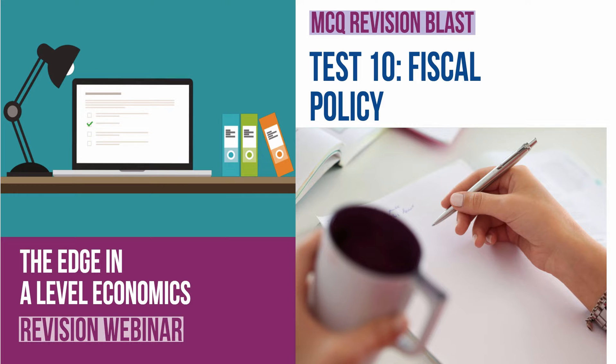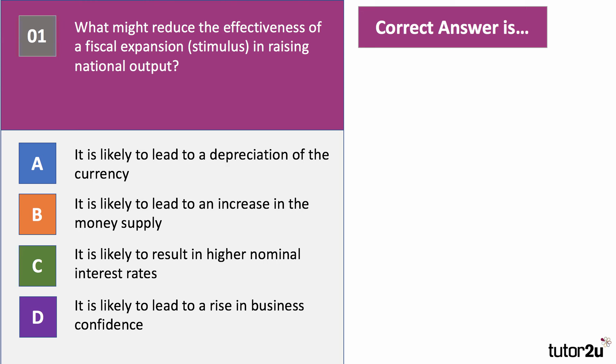Good luck with these questions. Here is the first one: what might reduce the effectiveness of a fiscal expansion or a fiscal stimulus in raising national output? Have a go at question number one — press the pause button and press play when you want the answer.